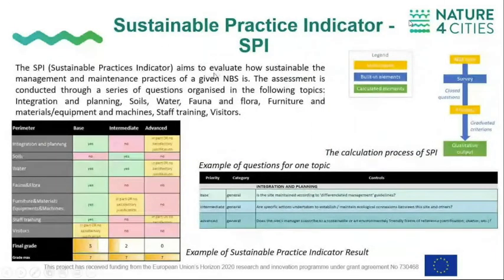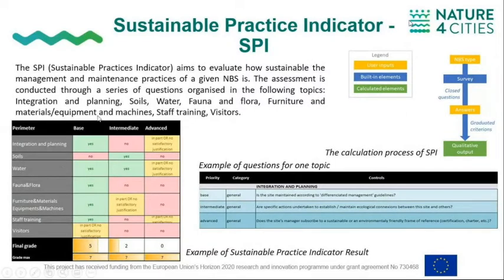For the sustainable practice indicator, you have to fill out a questionnaire constituting 20 to 25 questions. It is easy to fill in, as you can answer with yes or no, or partially satisfactory. At the end, you can see how sustainable your NBS implementation project can be.